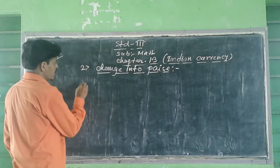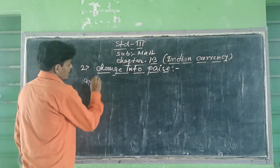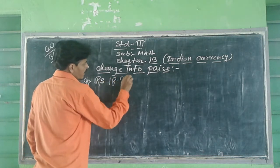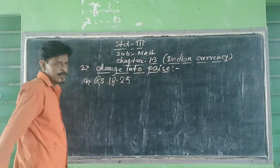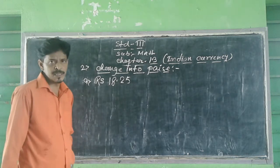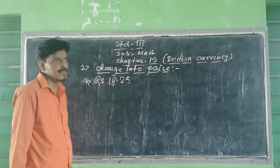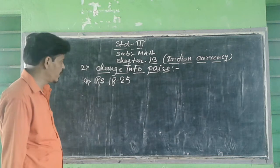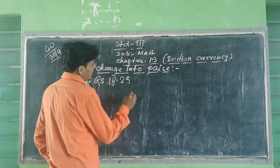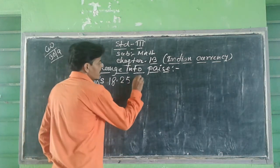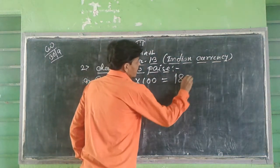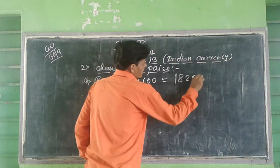Question Number 2: Change into paise. Question 2a: Rupees 18.25. We know when we change rupees into paise we multiply by 100. So, Rupees 18.25 into 100 equal to 1825 paise.